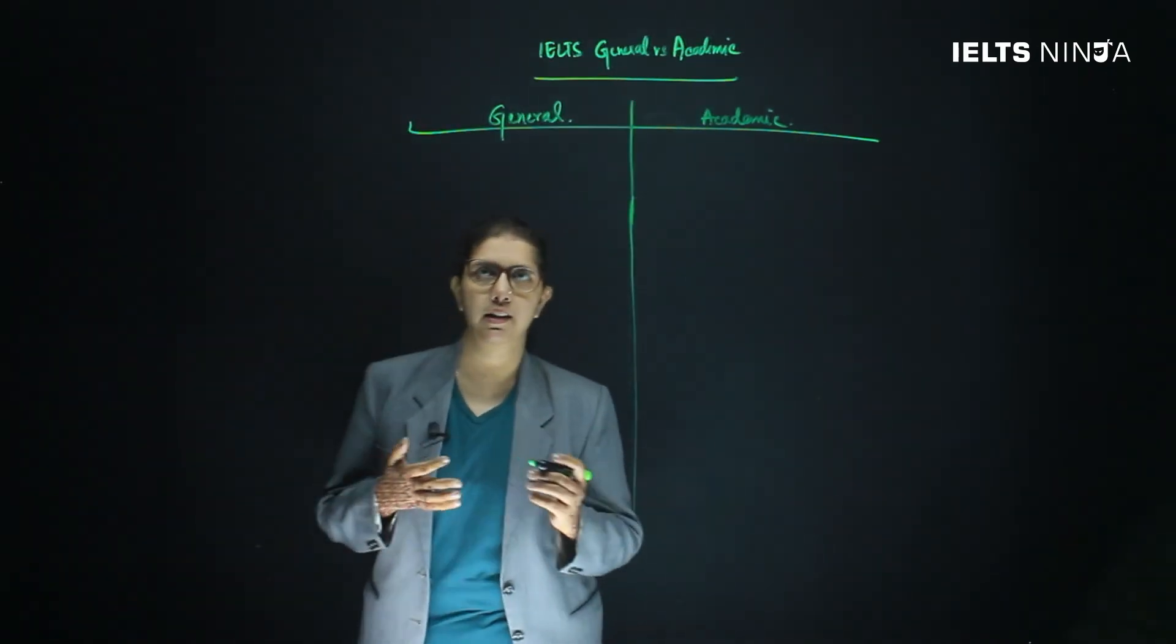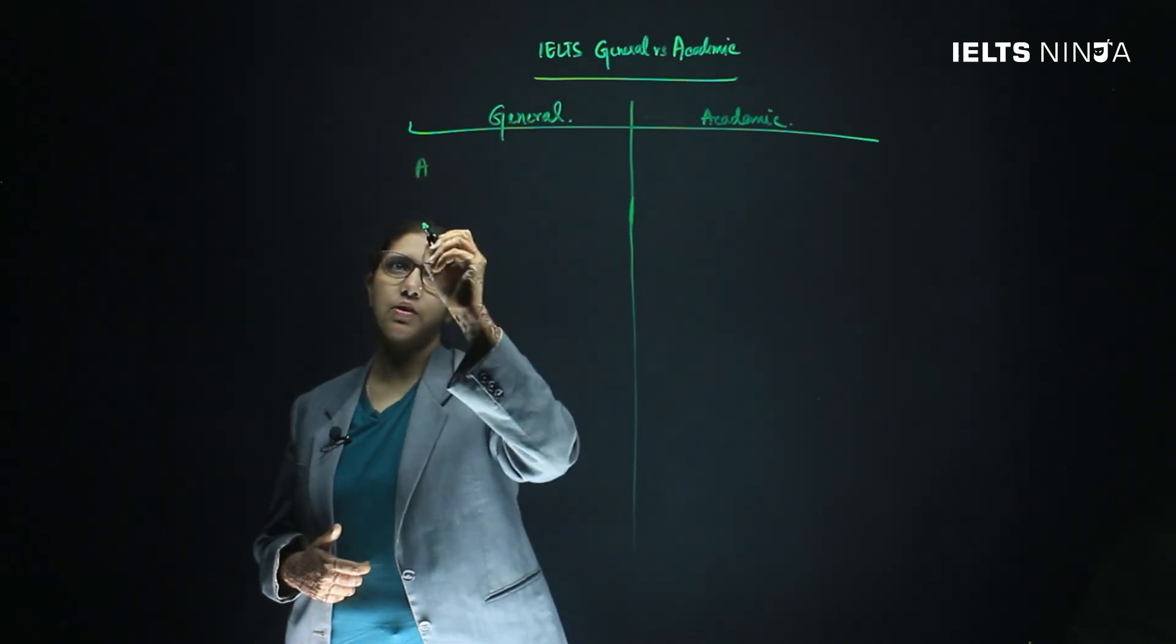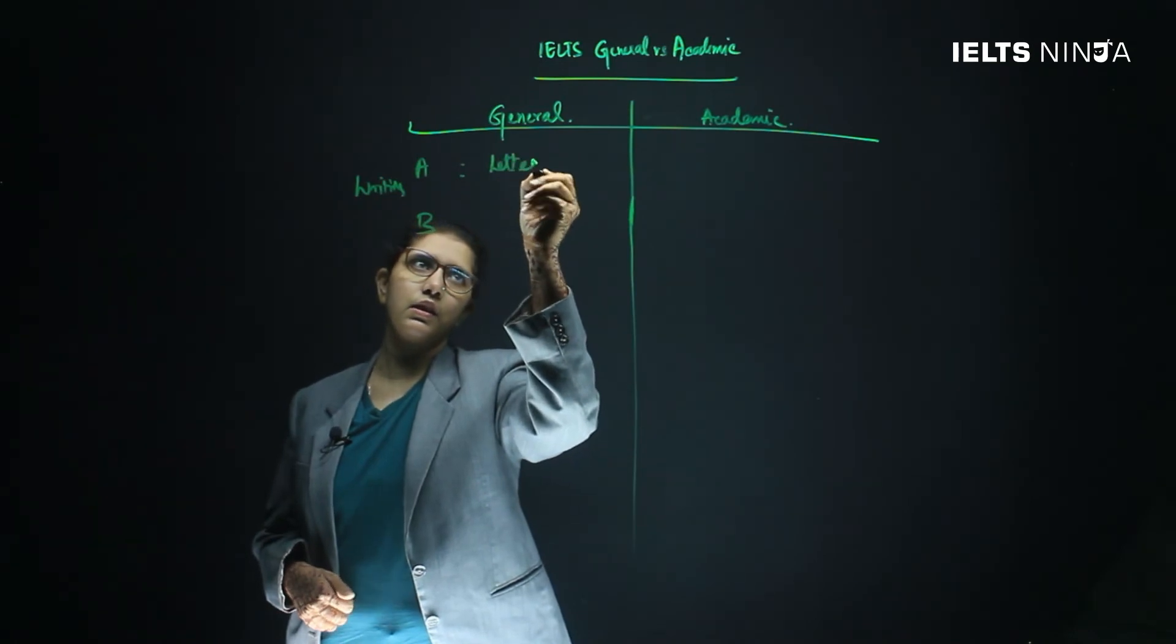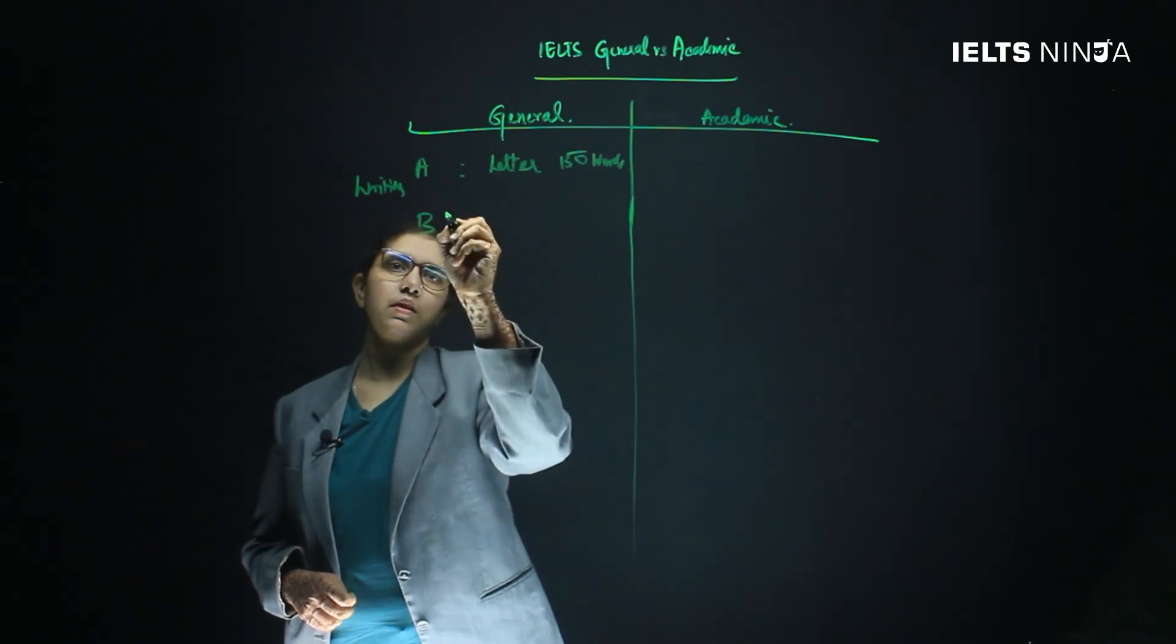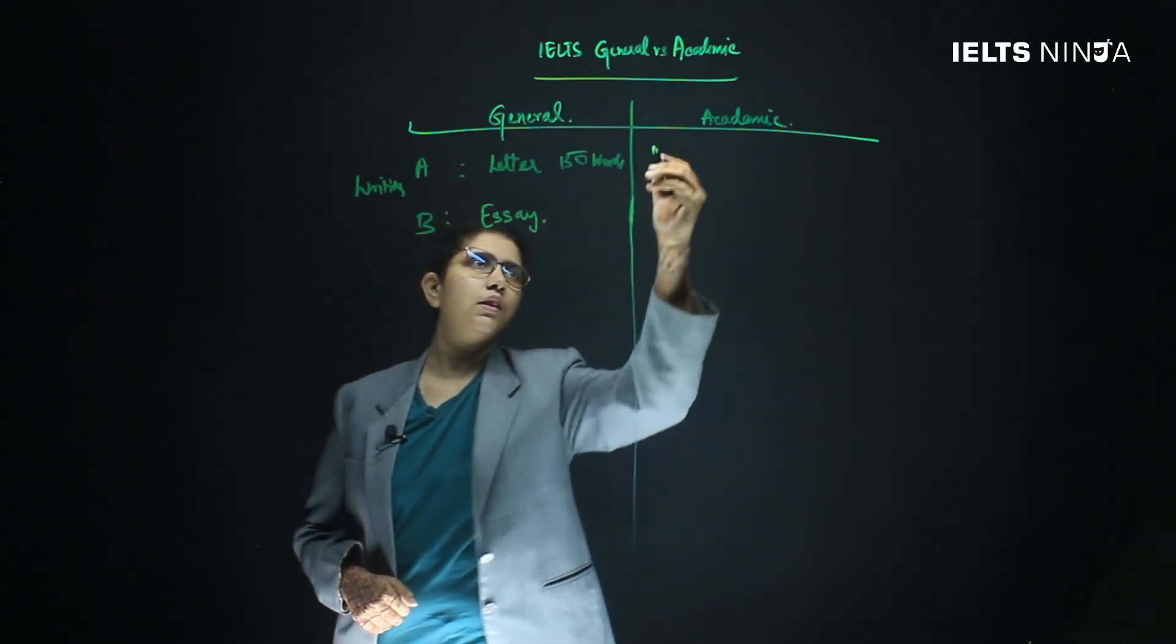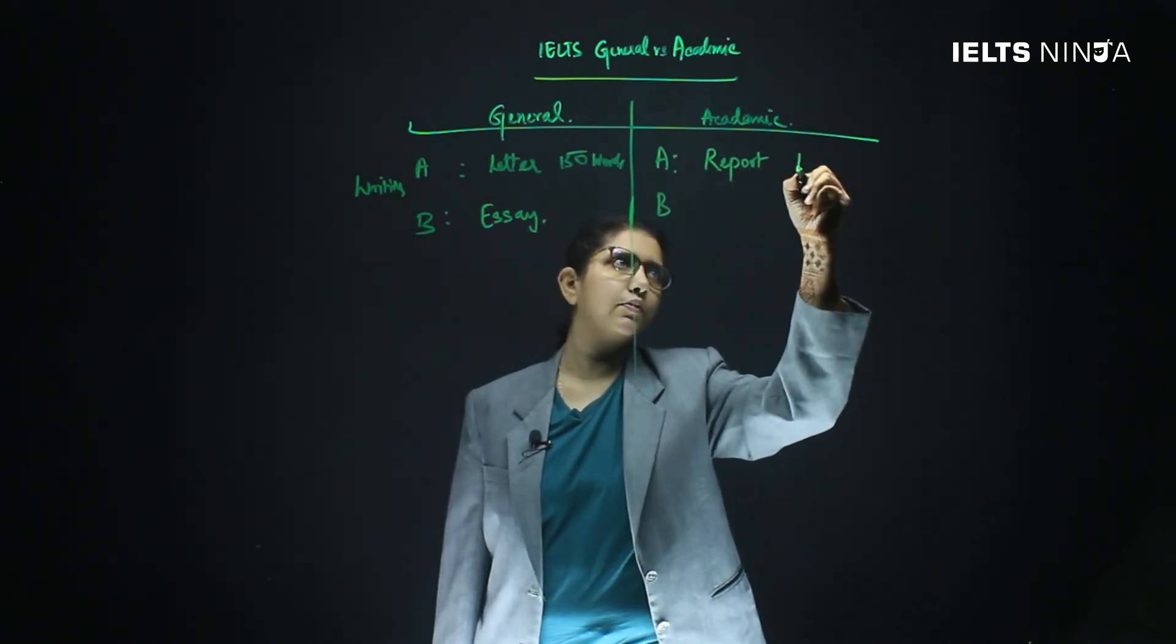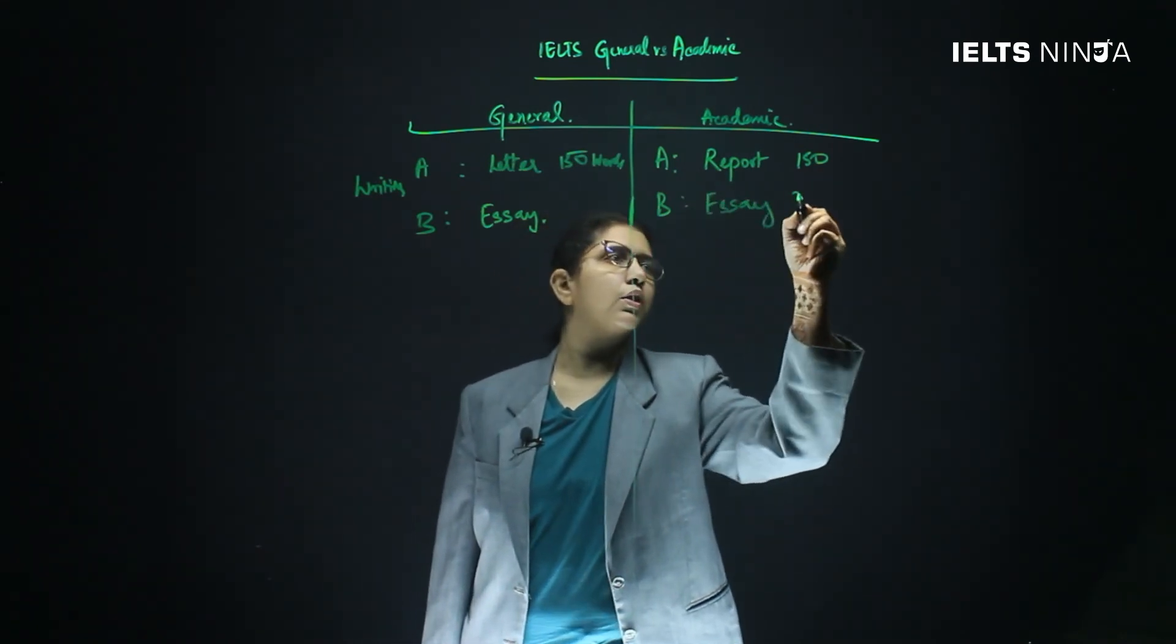Now let us look at the writing section. For the general writing test, you have two parts, section A and section B. In section A, you are supposed to write a letter that is roughly around 150 words. In section B, you are supposed to write an essay. As in the academic test, you also have section A and B. In section A, you are supposed to write a report of 150 words. In section B, you are supposed to write an essay of 250 words.